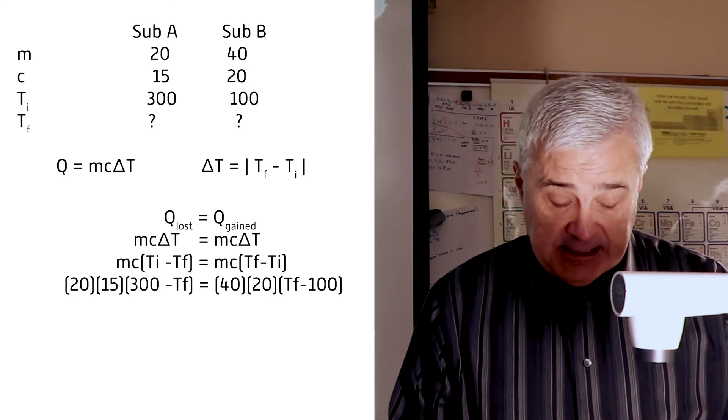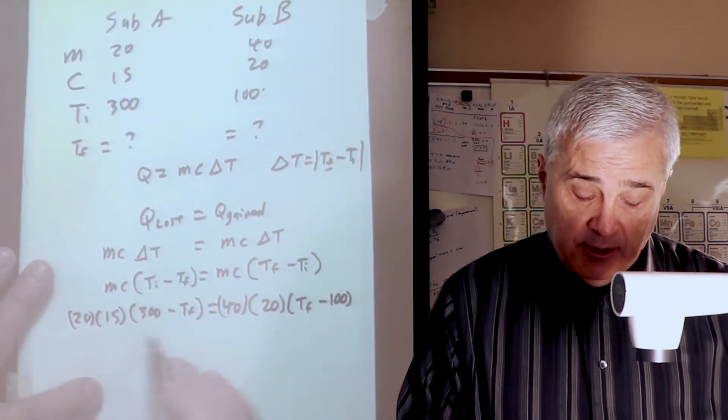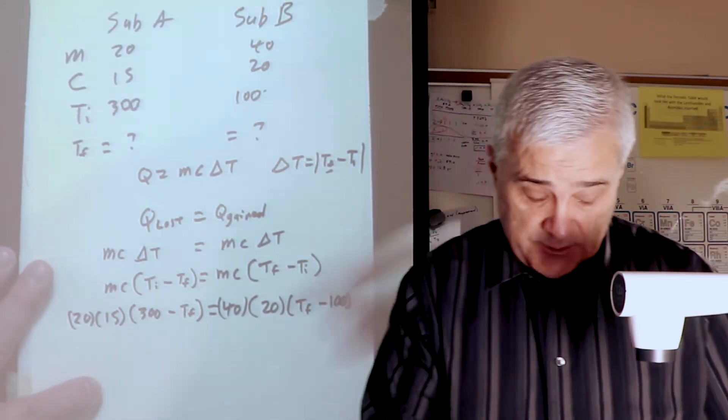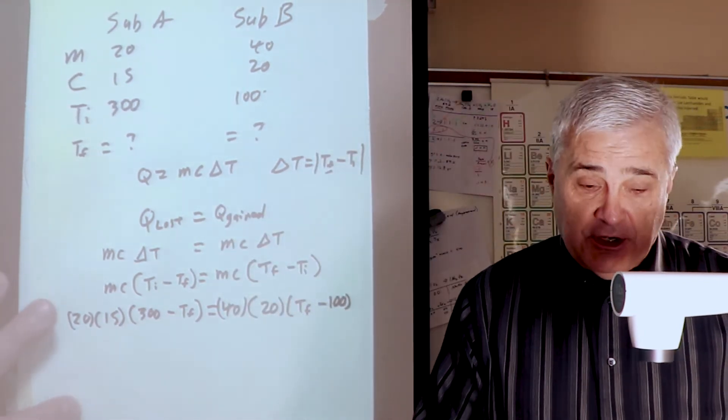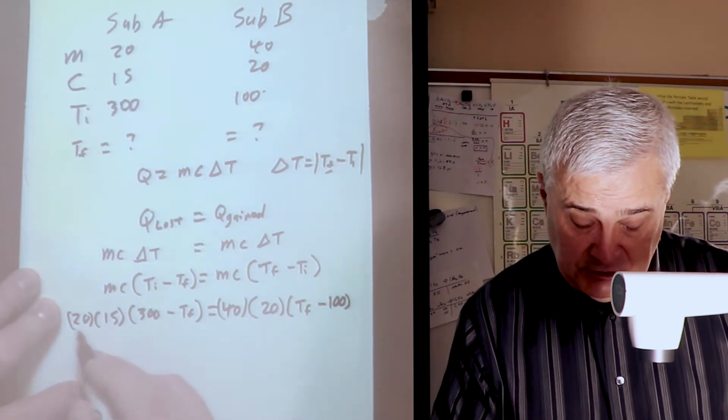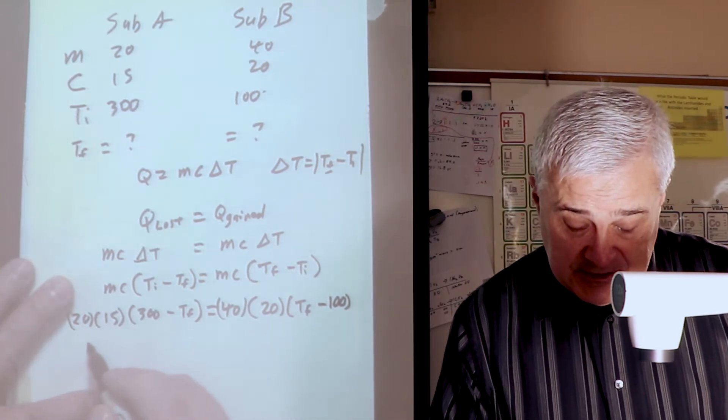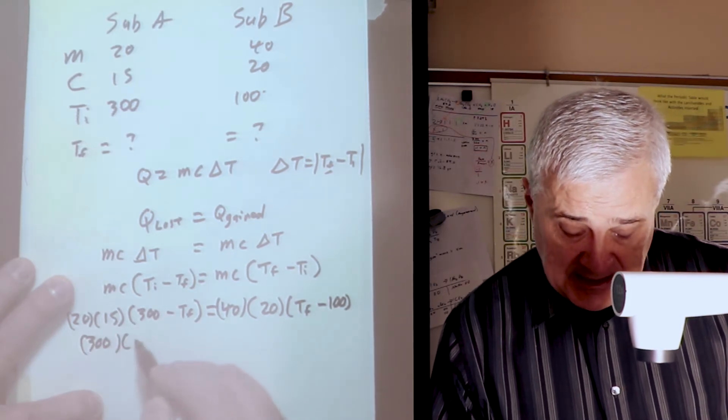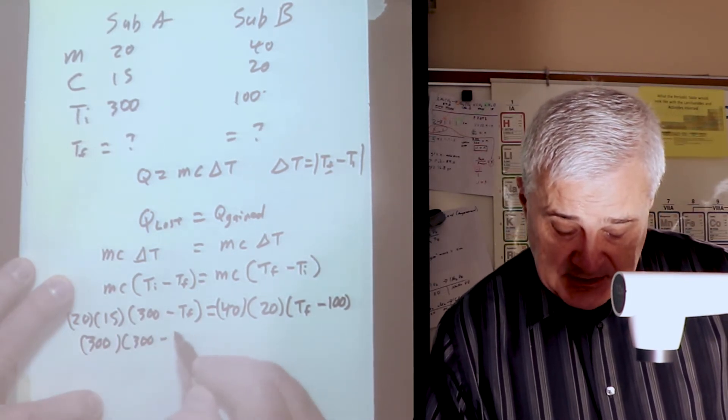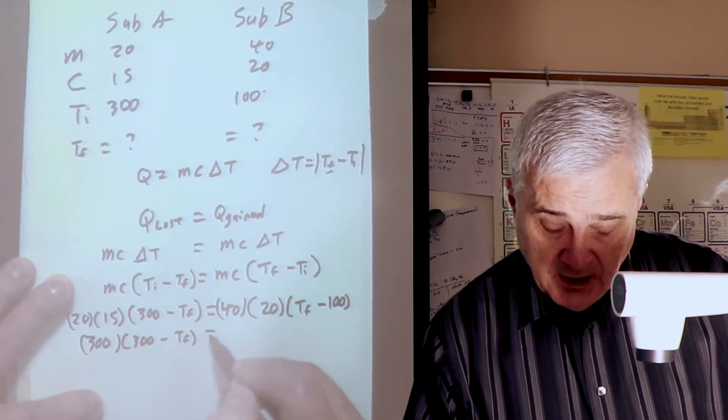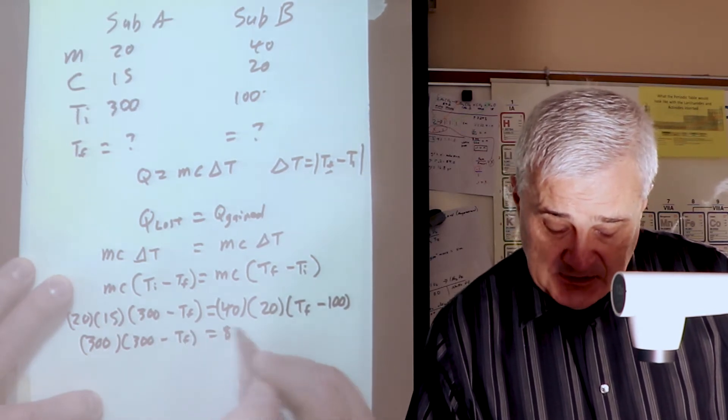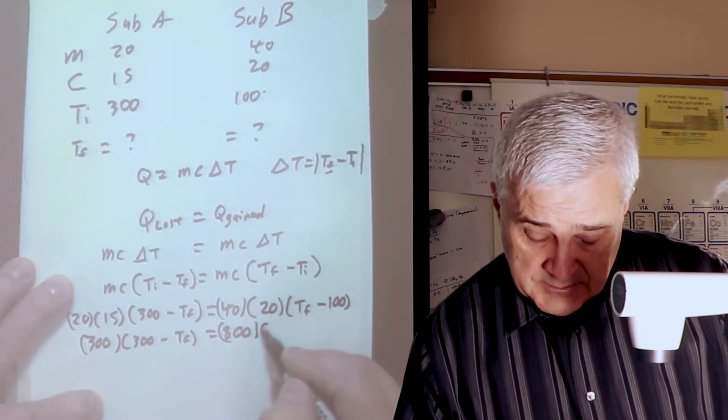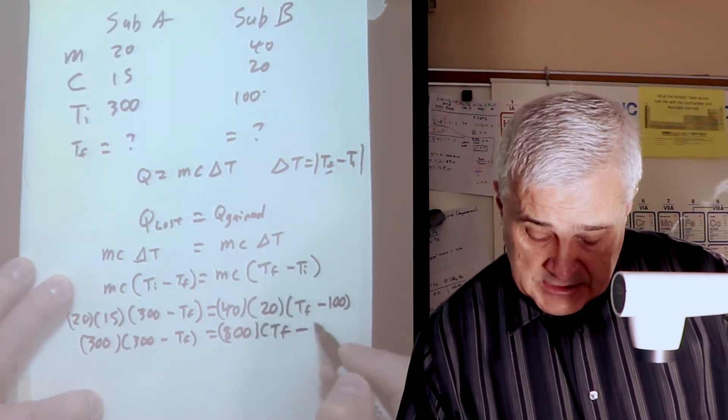At this point, we've got numbers and variables. We're just going to multiply. 2 times 15 is 30, add a 0, so 300 times 300 minus T sub F. 4 times 2 is 8, add two 0s. So now I have 800 times T sub F minus 100.